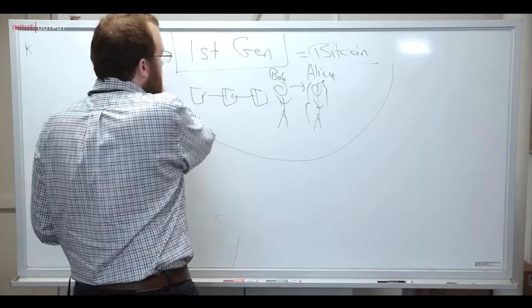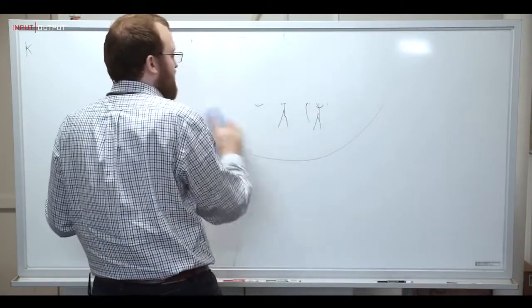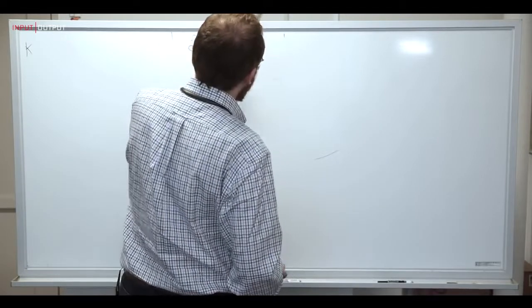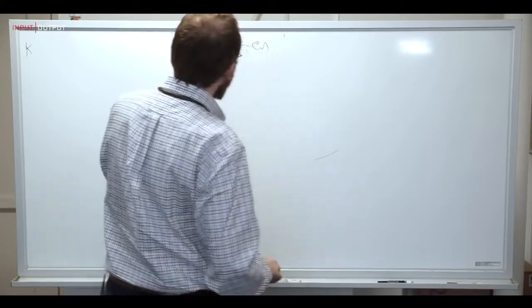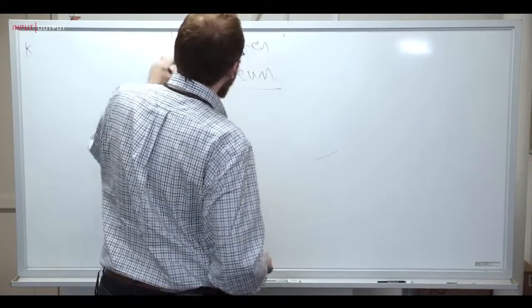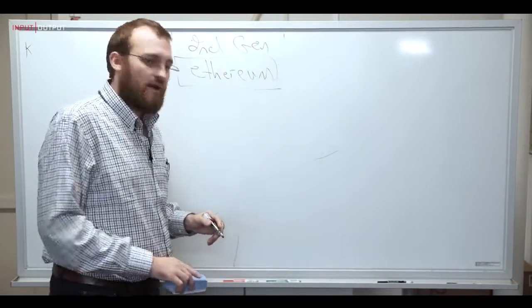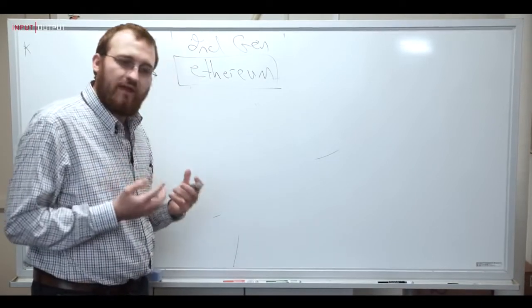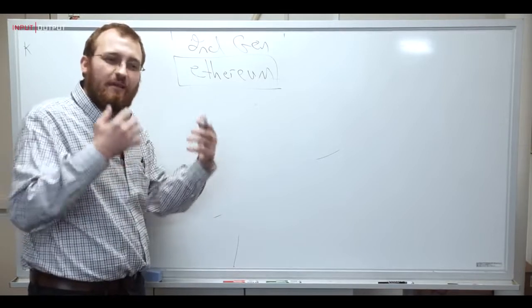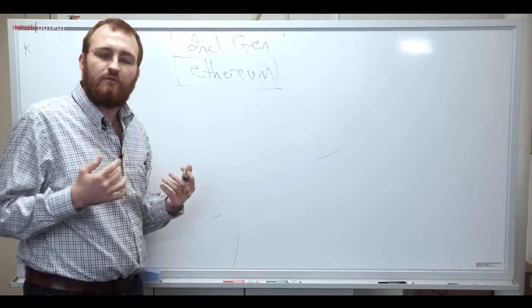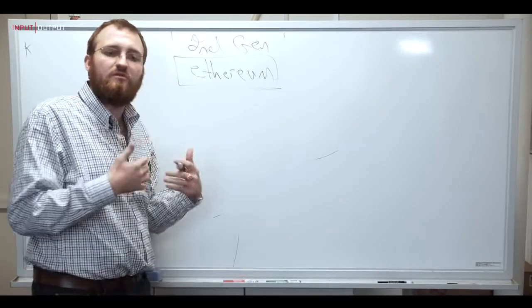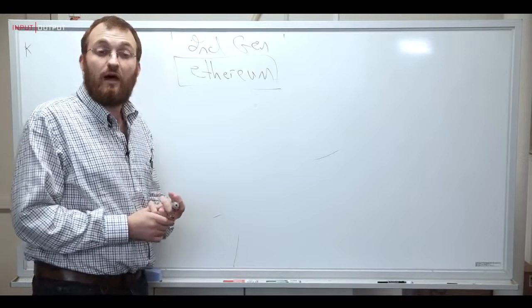So back in 2014, Vitalik Buterin, myself and many others came together and we launched the first second-generation blockchain. And this is Ethereum. Now Ethereum is kind of like when JavaScript came to the web browser. We went from these static simple pages that were not terribly functional but at least they did something to pages that were fully programmable and this enabled us to build the Facebooks, the Googles, the Gmails, the experiences we've come to know and love.